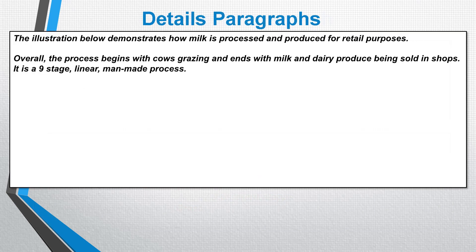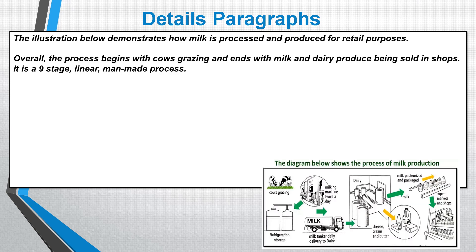Now we need to add our two details paragraphs. How do we decide what to write in each? We look at the diagram again and split it into two at a convenient and logical place. Here it seems logical to split the diagram before and after the milk is delivered to the dairy. That gives us our two paragraphs.